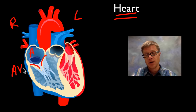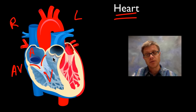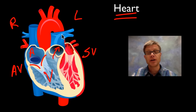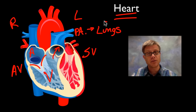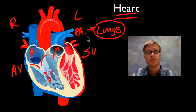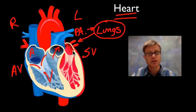Blood goes through the AV valve — sometimes called the tricuspid valve — down into the right ventricle. It then moves out through the semilunar valve into what's called the pulmonary artery. What's interesting about the pulmonary artery is it's an artery that has deoxygenated blood because it's headed to the lungs. The blood goes out, gets oxygenated in the lungs, and that oxygenated blood comes back into the left atrium.